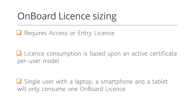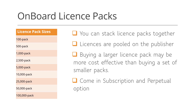You need to have active access or entry licenses in order to use OnBoard functionality. OnBoard licenses are consumed on an active certificate per user model. For example, a single user with three network devices will only consume a single OnBoard license. Revoking all active device certificates for a particular user will release that OnBoard license back to the pool, but as long as that user has a single active device certificate, the OnBoard license will remain consumed. OnBoard license packs come in the same sizes as all other application licenses, from 100 up to 100,000 per pack. They can be stacked and purchased on either a subscription or a perpetual model.